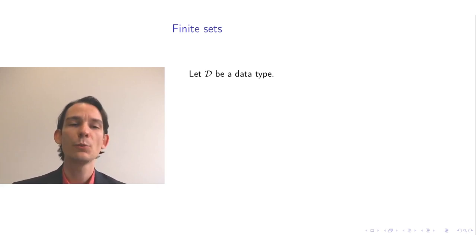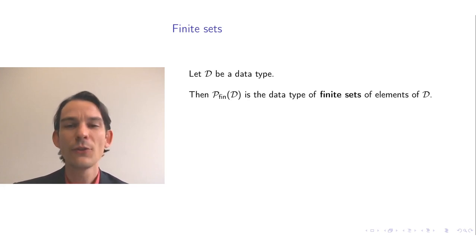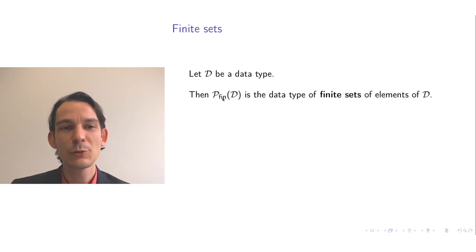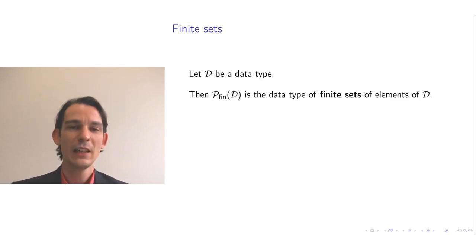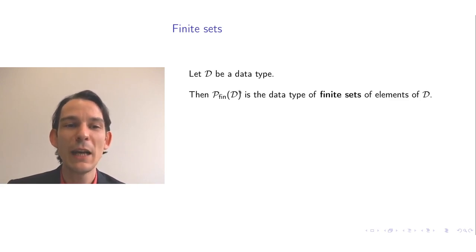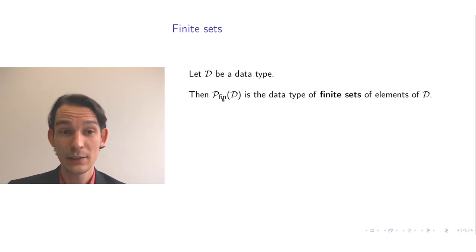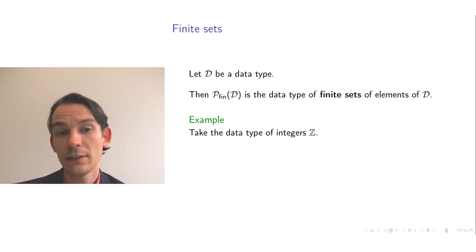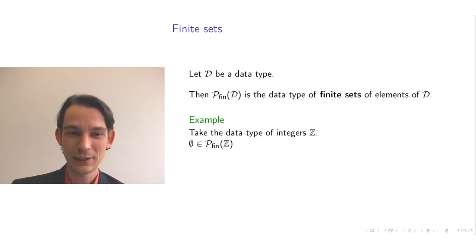Let's assume we start with a given data type D. You can form the data type of finite sets comprising elements of D, written P_fin(D) — where P typically stands for power set and the subscript fin indicates we're interested in the finite sets of elements of D. To make it concrete, take the simple data type of integers Z and build the data type of finite sets of integers P_fin(Z). The empty set is a value of that data type, because it is finite — it consists of zero elements.